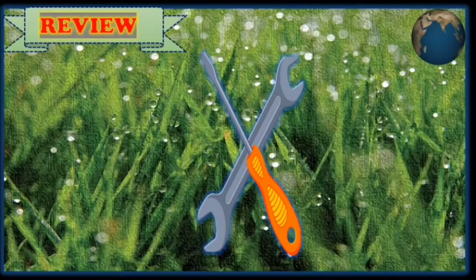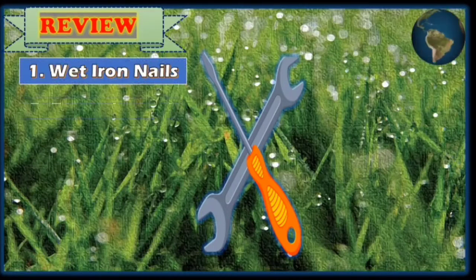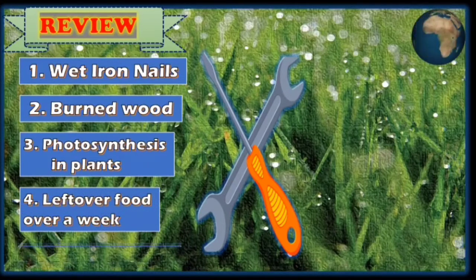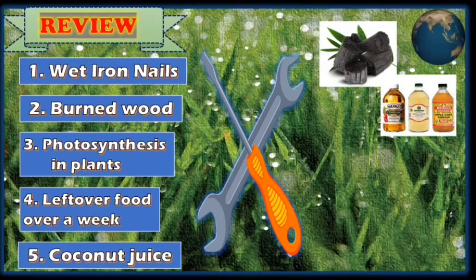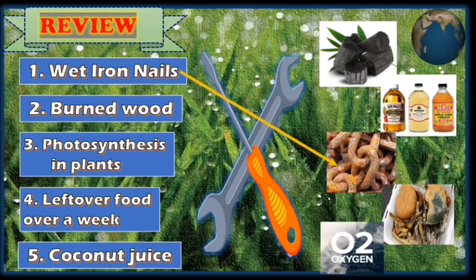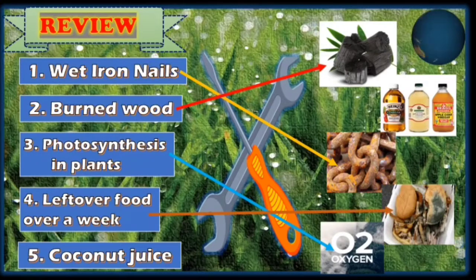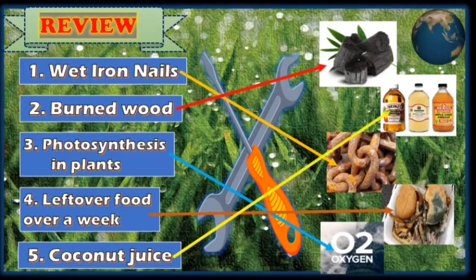All you have to do is to match the following materials with each product after the phase change occurs. In column 1, we have wet iron nails, burned wood, photosynthesis in plants, leftover food of over a week, and coconut juice. For number 1, the change that may happen to wet iron nails is rust. For number 2, the product of burned wood will be charcoal. Number 3, the outcome of photosynthesis in plants is oxygen. For number 4, leftover food of over a week, the change that may happen is spoiling of food. And number 5, coconut juice, the change that may happen is vinegar.